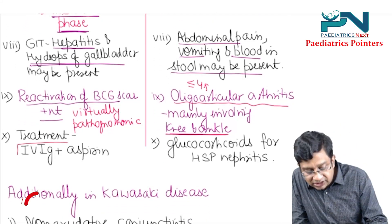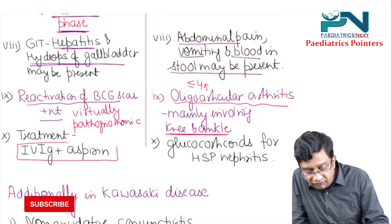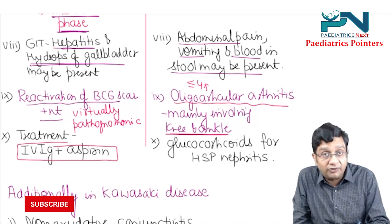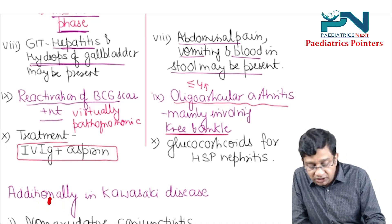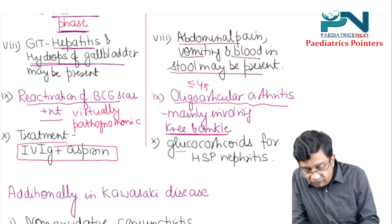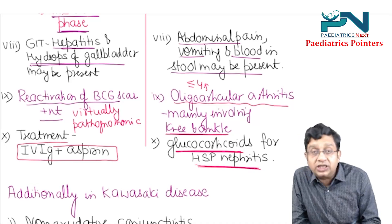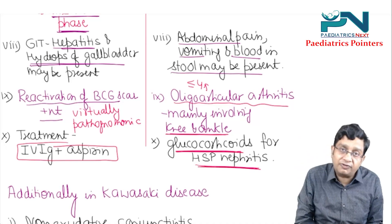The treatment of Kawasaki disease is IVIG plus aspirin. In HSP, glucocorticoids are given specifically for HSP nephritis.